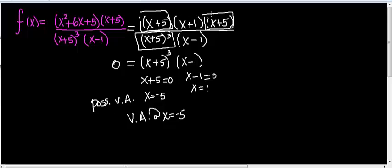If I had gotten a greater multiplicity in the numerator than in the denominator, then it's a hole. If I had the same multiplicity in the numerator and denominator, it's also a hole. But when the multiplicity is greater in the denominator than in the numerator, it's definitely a vertical asymptote.